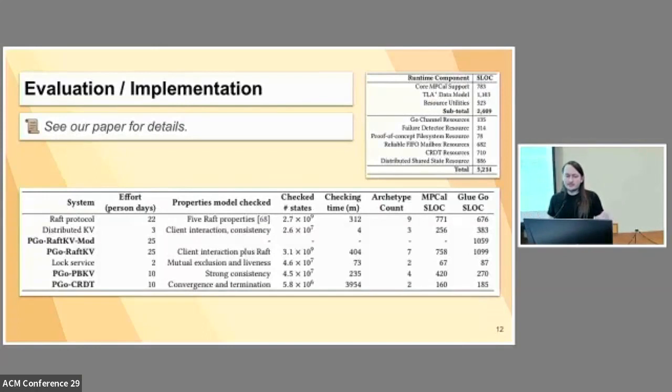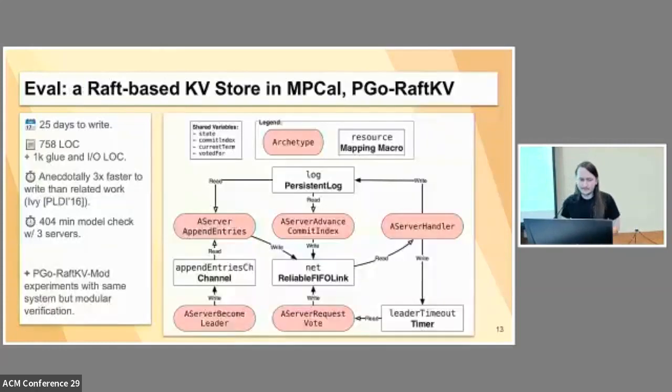Moving on to the implementation and evaluation. There's a lot that I can't talk about in the time that I have, but we implemented a runtime and a compiler, and we implemented multiple systems to test to see how our system does. The ones I'm going to talk about are Pigo Raft KV Mod and Pigo Raft KV. These are Raft-based key value stores written in MP-Cal. And if you look at the architecture there, that's just basically there to show you that these are real complex systems that we actually built and they're representative of the kind of system design you might want for a core key value store. This took us 25 days to write. It's about 750 lines of code at the specification level.